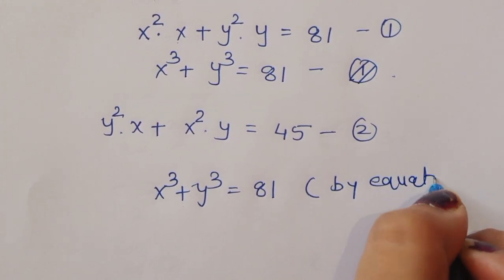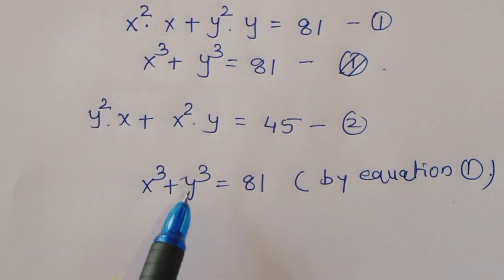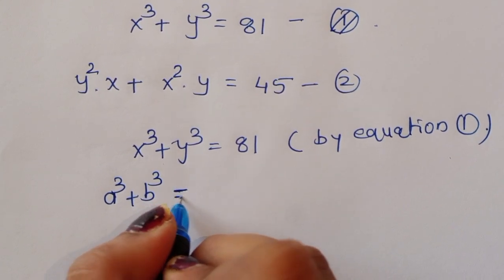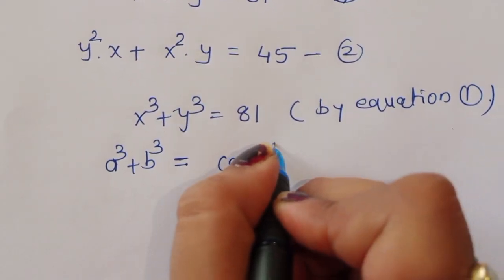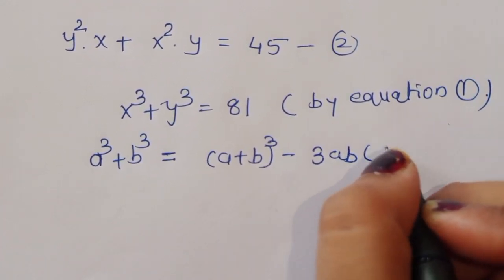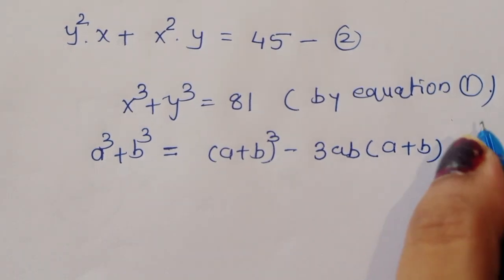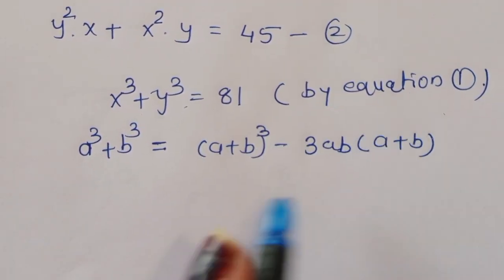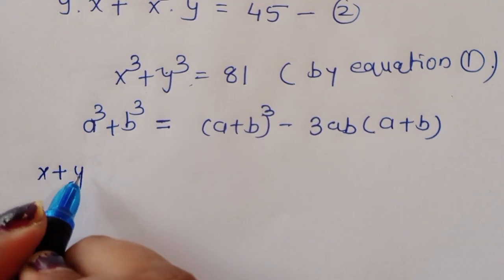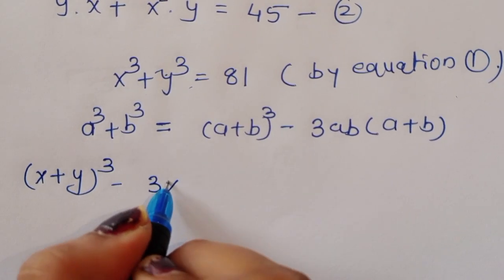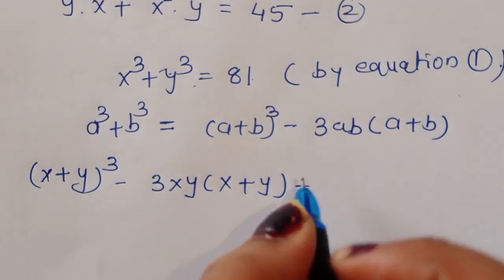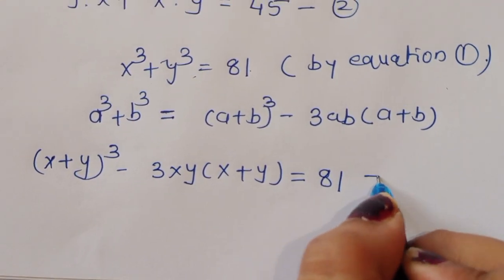Using the sum of cubes formula: a³ + b³ = (a + b)³ − 3ab(a + b). Applying this to equation 1: x³ + y³ = (x + y)³ − 3xy(x + y) = 81. This is equation 3.